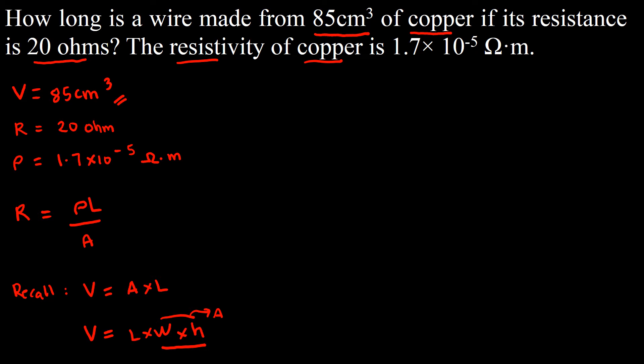If volume equals area times length, then area is just equal to volume divided by length. So we can manipulate this and express area as A equals volume divided by length.